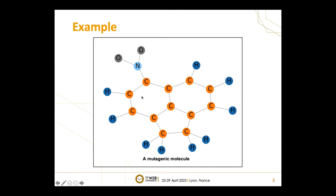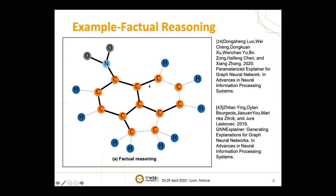Considering factual reasoning: what will happen if we try to generate an explanation for the mutagenicity? Methods based on factual reasoning look for a subgraph whose information is sufficient enough to produce the same prediction as using the whole original graph. The subgraph with the bold edges is the explanation extracted by factual reasoning. Factual reasoning favors subgraph explanations that contain enough information to make the same prediction, but the extracted subgraph may include redundant nodes or edges and not be compact enough — in this case, these four edges are not part of the true reason.